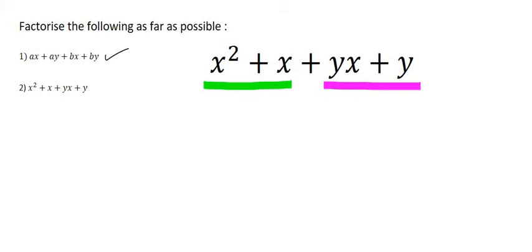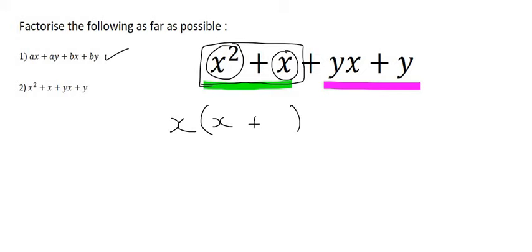And so if we take out a common factor of x in the first part over here, in term number one you're still going to have another x left over, and if there's nothing left over you just put a one. Then, what are we going to take out of these two? They're going to have a positive y. And so then we open up a bracket, and what would we have left in this term? Just an x. And what would we have left over here? Just a positive one.